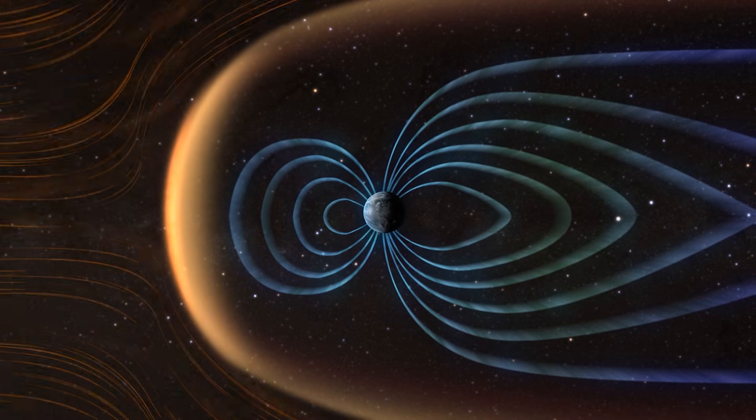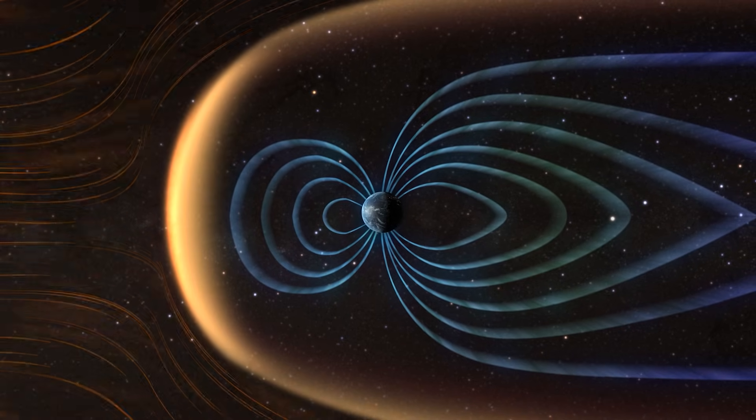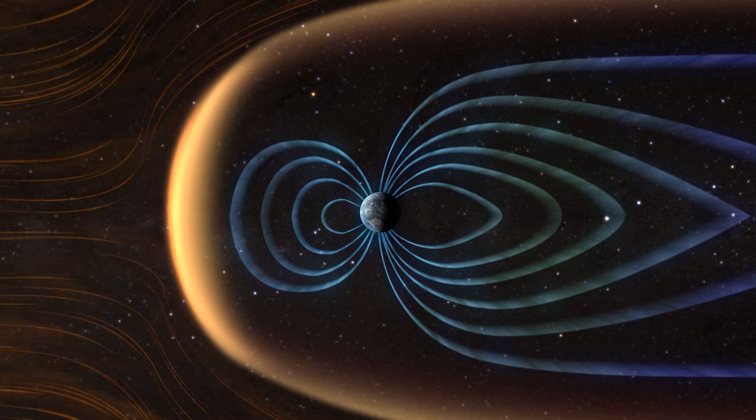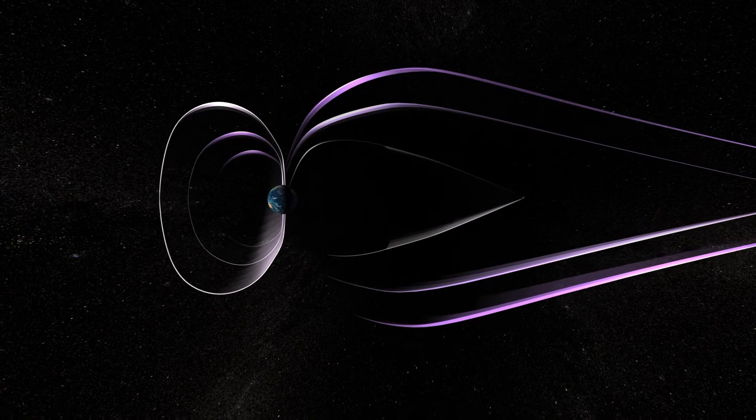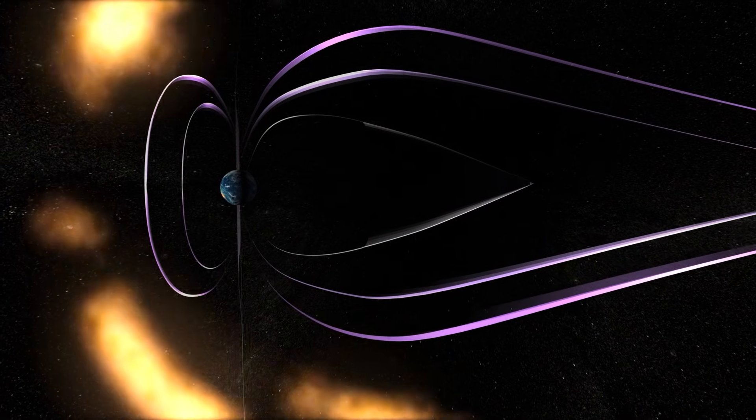Above the ionosphere is the magnetosphere, a region above the Earth with no atmosphere but with a strong magnetic field. That magnetosphere helps to protect the Earth from bursts of highly charged particles ejected from the sun.